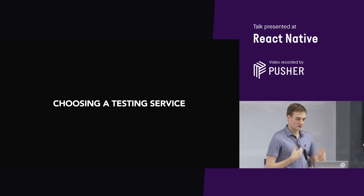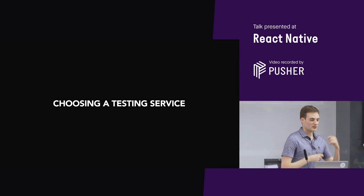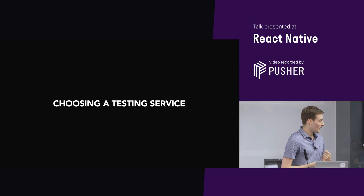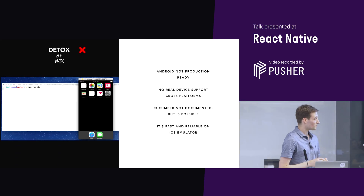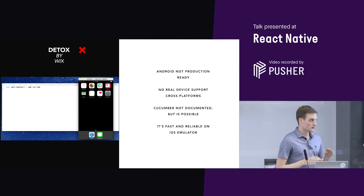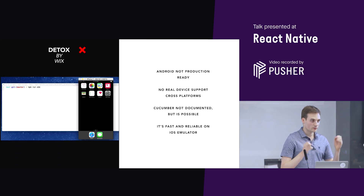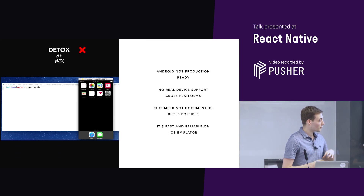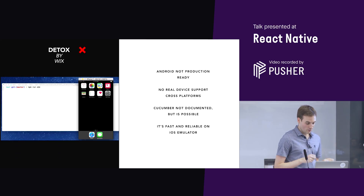So how are we actually going to build this testing framework? I've just shown you the test runner — we need to actually know how we're going to click things in the app. You may be familiar with Detox. Basically it's a test framework that does the clicking and it works with emulators, the iOS emulator. It partially works for Android, but it's not completely production ready. It will soon hopefully support Cucumber, but right now it's not really documented.